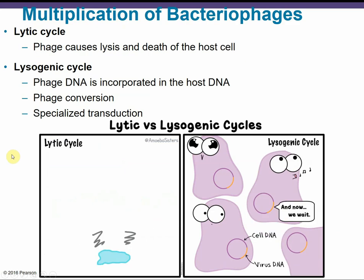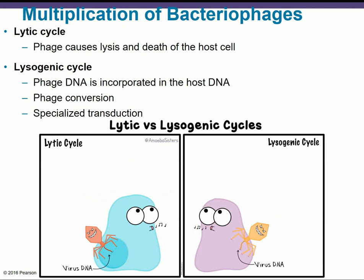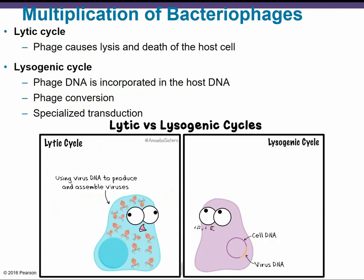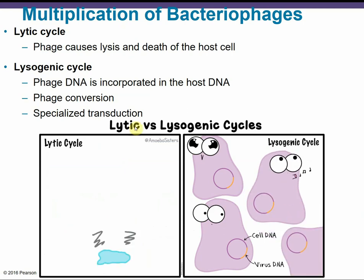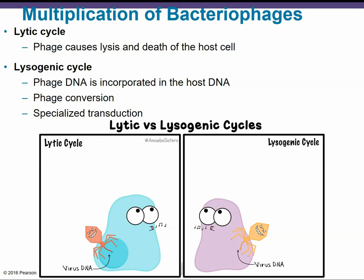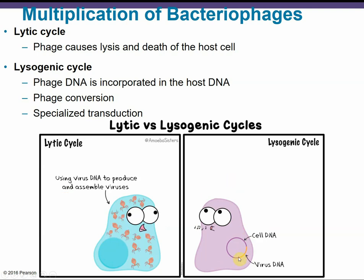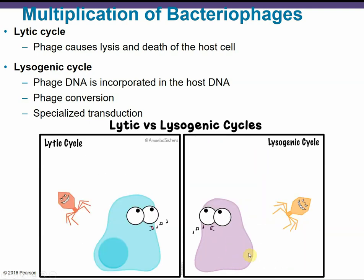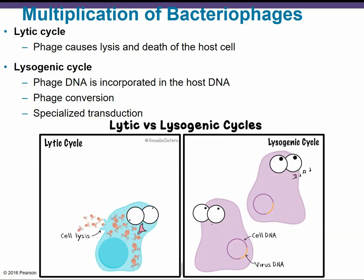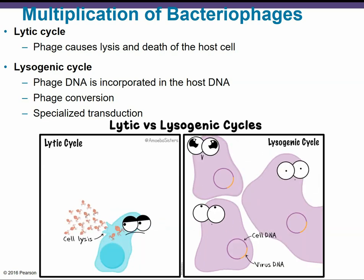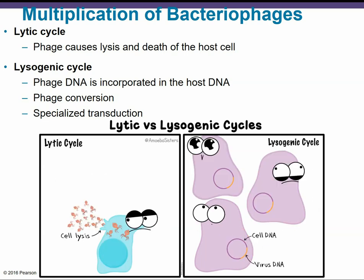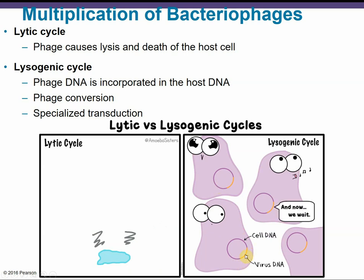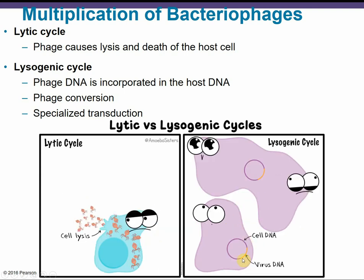Bacteriophages can multiply by two alternative mechanisms: the lytic cycle or the lysogenic cycle. In the lytic cycle, the phage causes lysis or rupturing of the cell and ultimately its death. The lysogenic cycle is where the phage DNA is actually incorporated into the host DNA, hiding within it and being replicated as the cell replicates, while the host cell remains alive. The lysogenic cycle involves phage conversion, where the viral DNA is incorporated into the bacterial chromosome.